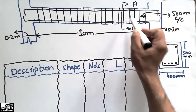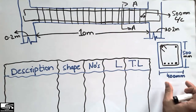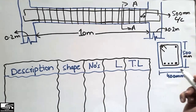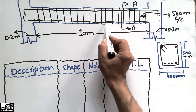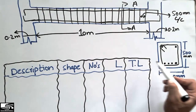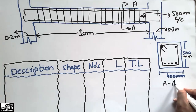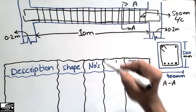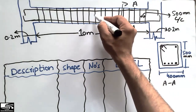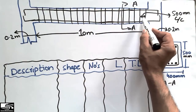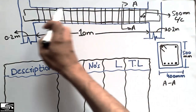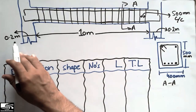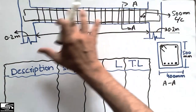At section A, the width of the beam is 400 millimeters and the depth is 500 millimeters. You can see the bottom bars in the cross-section view — there are four bottom bars. The top bars are two in number. The stirrups are also shown here, spaced at 500 mm center to center throughout the beam. The column width is 0.2 meter on the right side and 0.2 meter on the left side, which support the beam.